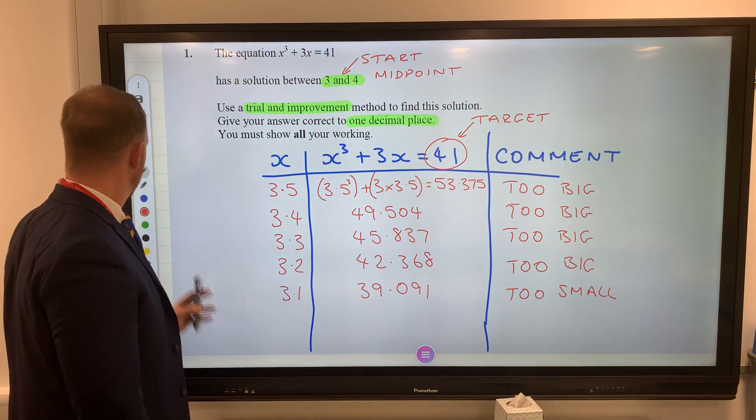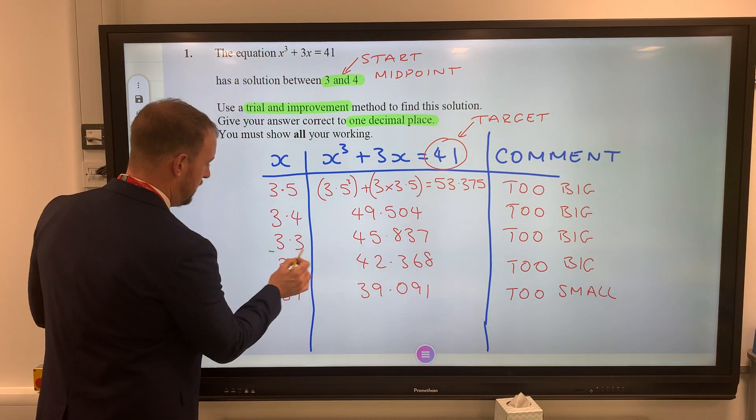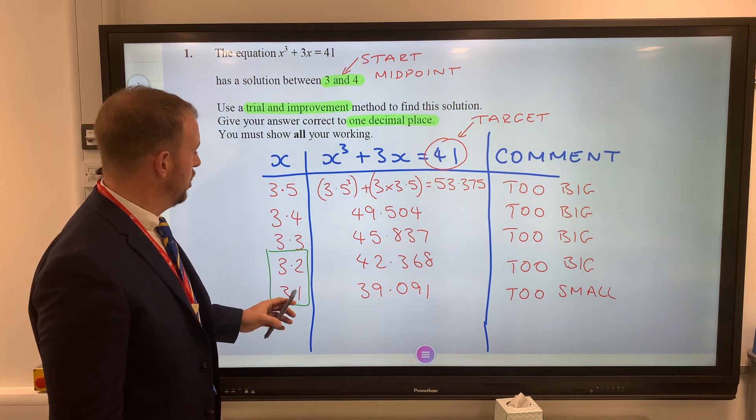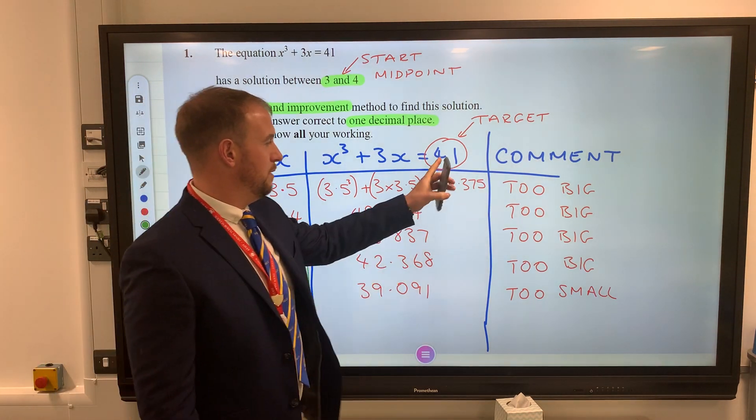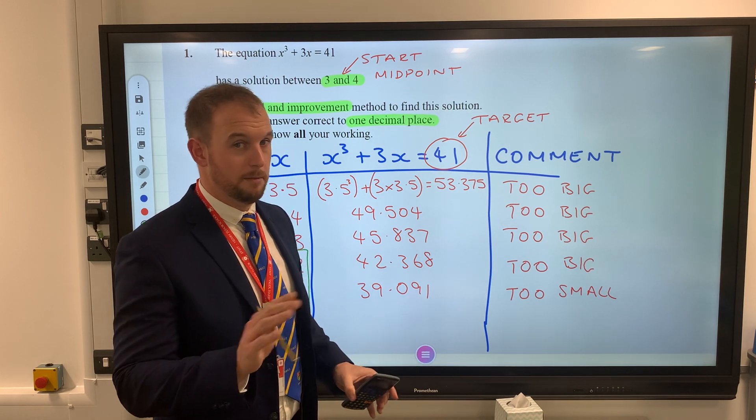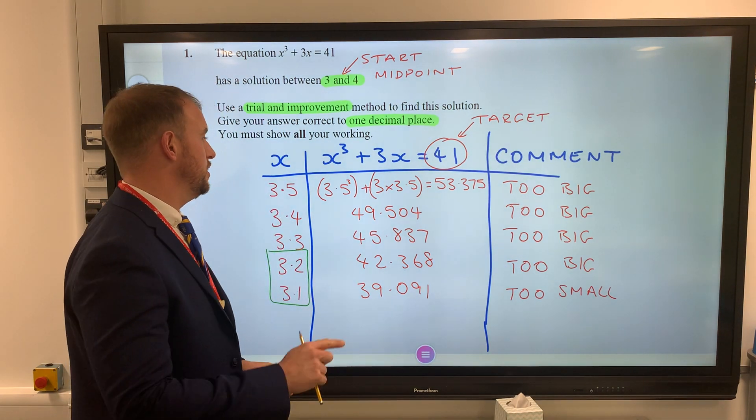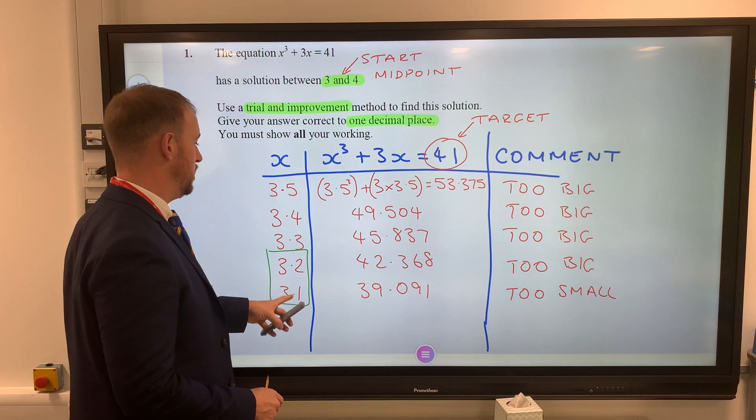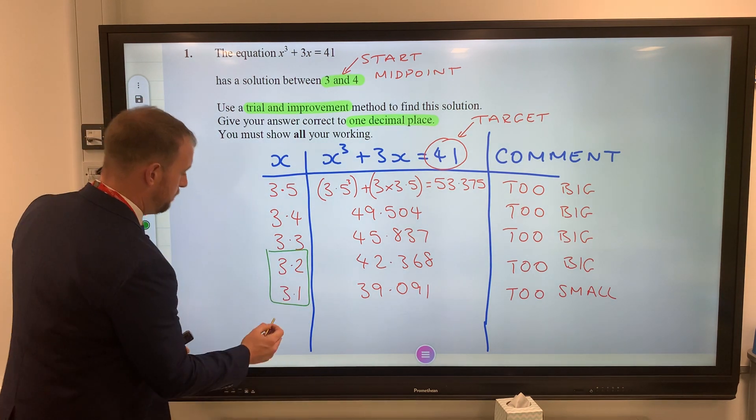You might start off getting too small and then it's too big, or this time it was too big the whole way down until you get too small. So our answer is going to be either 3.1 or 3.2. Now you might be able to work out in your head which one it's closest to, but the examiner is interested in you finding it halfway between these to work out which one it is closest to.